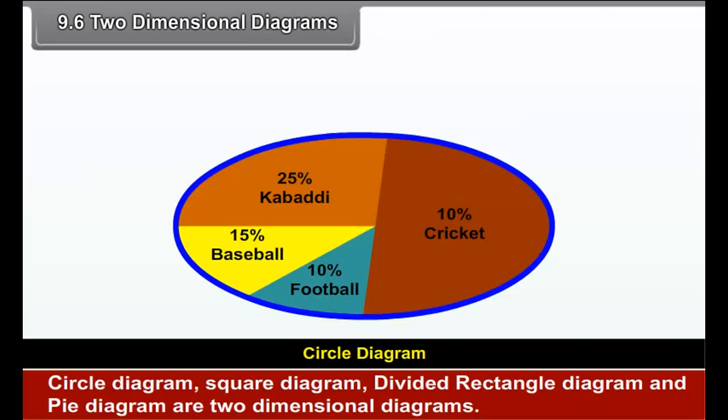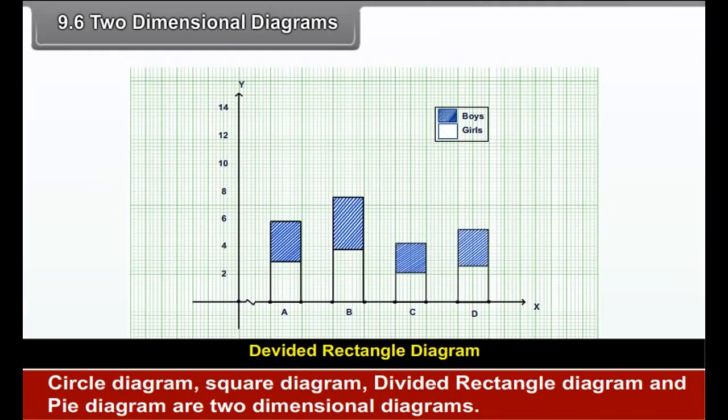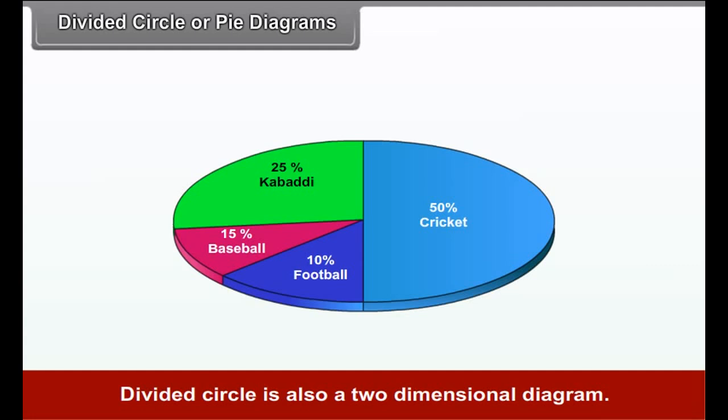Method. Find out the highest and lowest values of data. Accordingly select a scale, plot the points that will determine the height of bars. Draw pillars or bars up to the plotted heights. Shade these bars for better visual impact. Write title, scale, legend, etc.